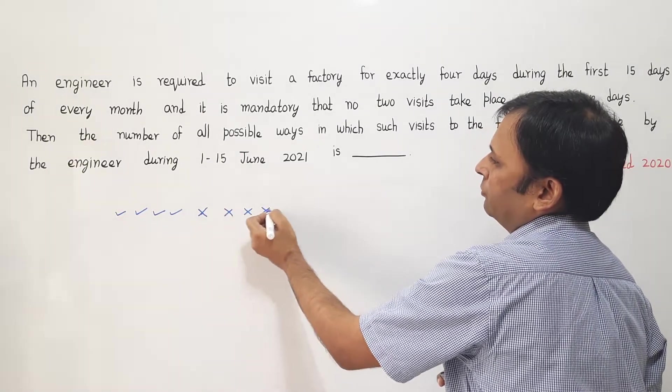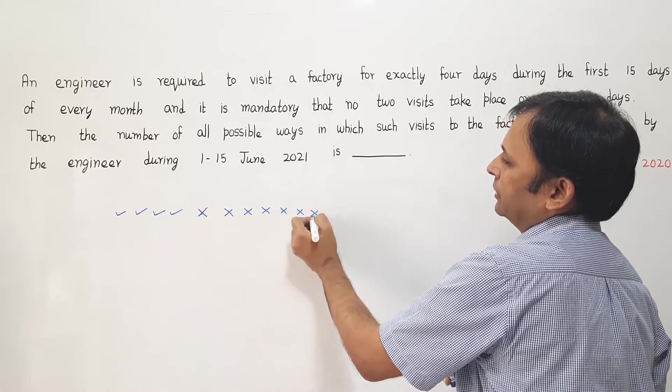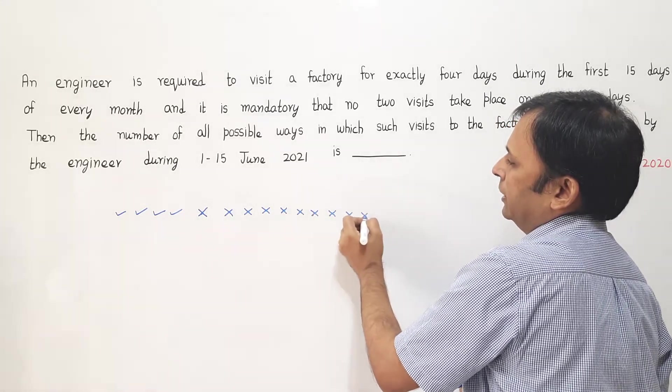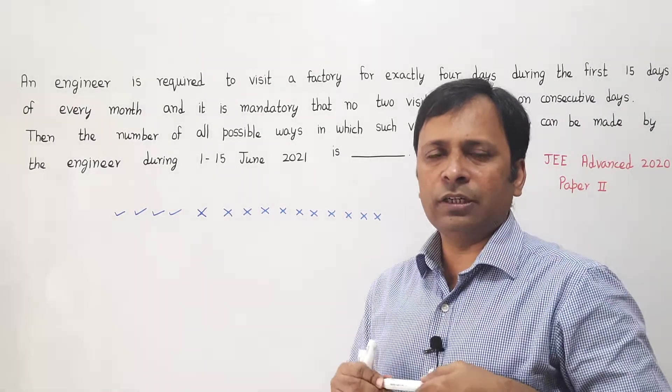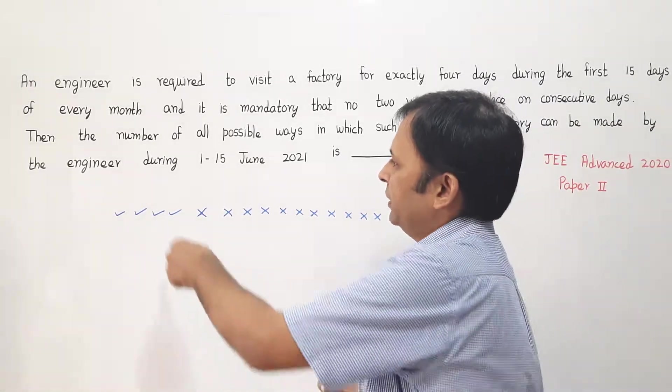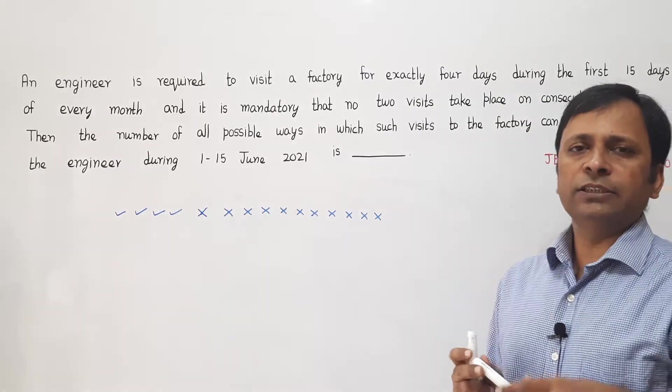And suppose remaining 11 days he is not making any visit, then I am making 11 crosses. So 1, 2, 3, 4, 5, 6, 7, 8, 9, 10, and 11.